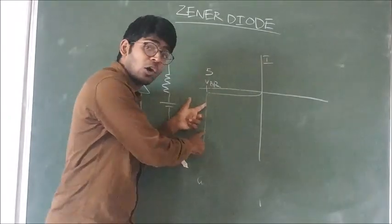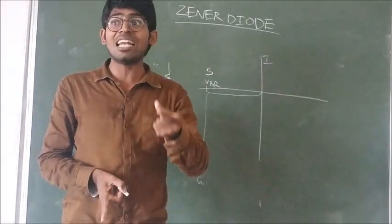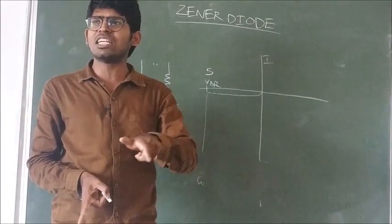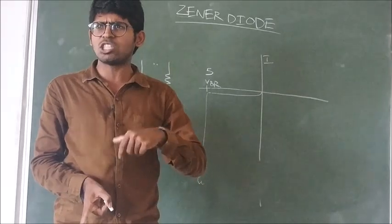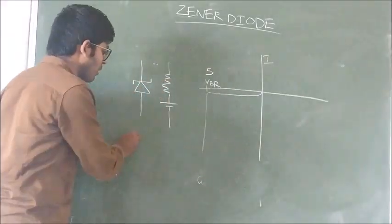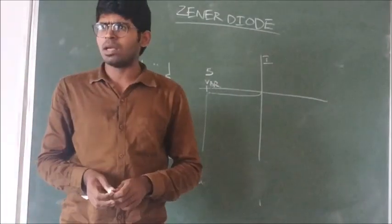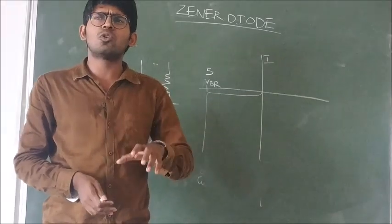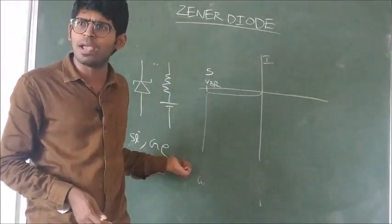To control this current, we definitely require external resistance. We have to use a Zener diode that can withstand this current. We prefer silicon compared to germanium because silicon has the capability to withstand higher currents.